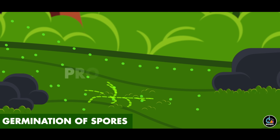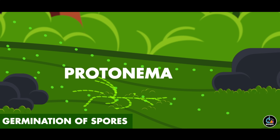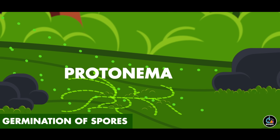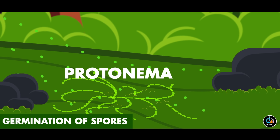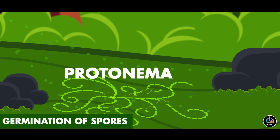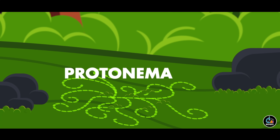During the initial stage, the spores divide mitotically and form a green photosynthetic and filamentous plant body called protonema. All the cells of protonema are haploid, so it represents the gametophytic plant body.